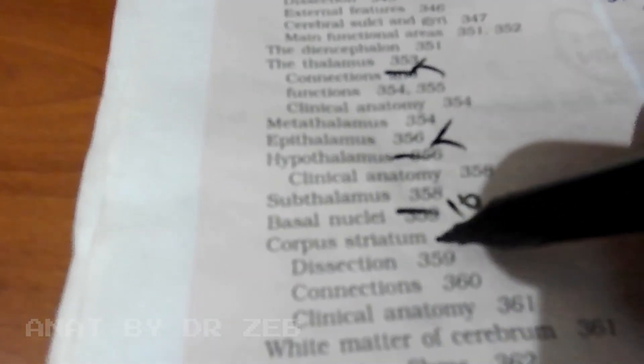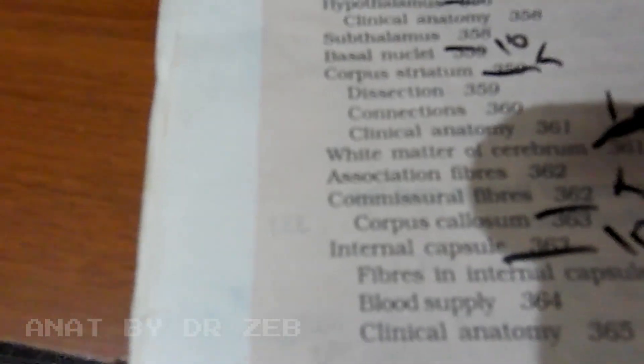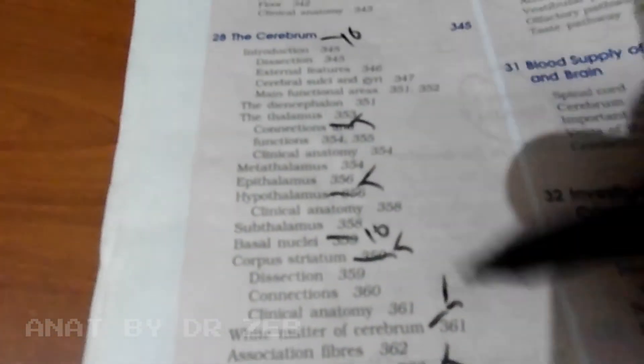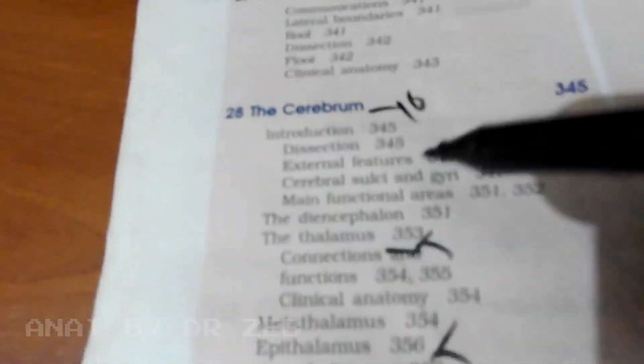Cerebrum ten marks classical, thalamus for five marks, hypothalamus for five marks, basal nuclei for ten marks, corpus striatum for five marks, white matter of cerebrum for five marks, internal capsule for ten marks, corpus callosum for five marks. This is a very important chapter, the cerebrum chapter, please concentrate on this one.